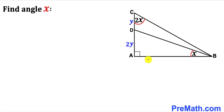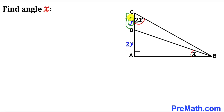In this video we have a right triangle ABC that has been divided into two triangles such that angle ABD is X, angle ACB is 2X, side length CD is Y units, and side length AD is 2Y units. We are going to calculate angle X.